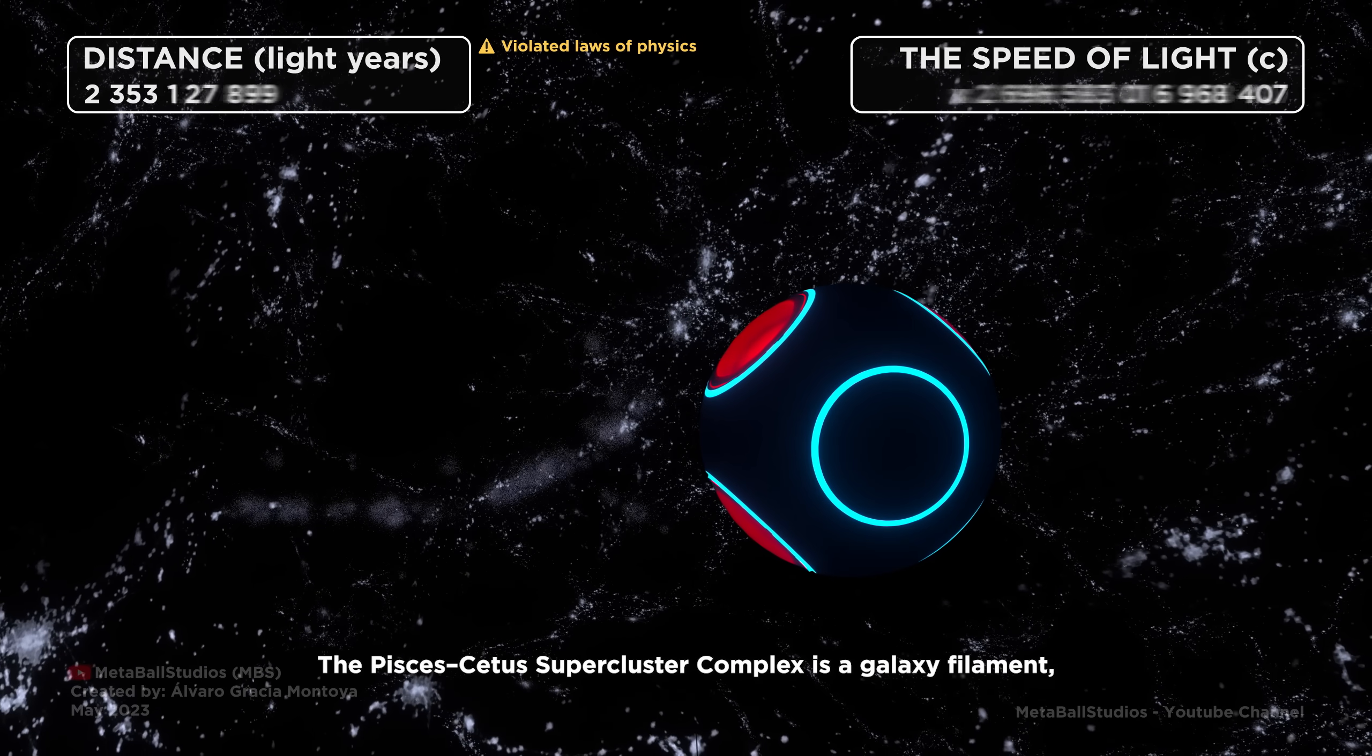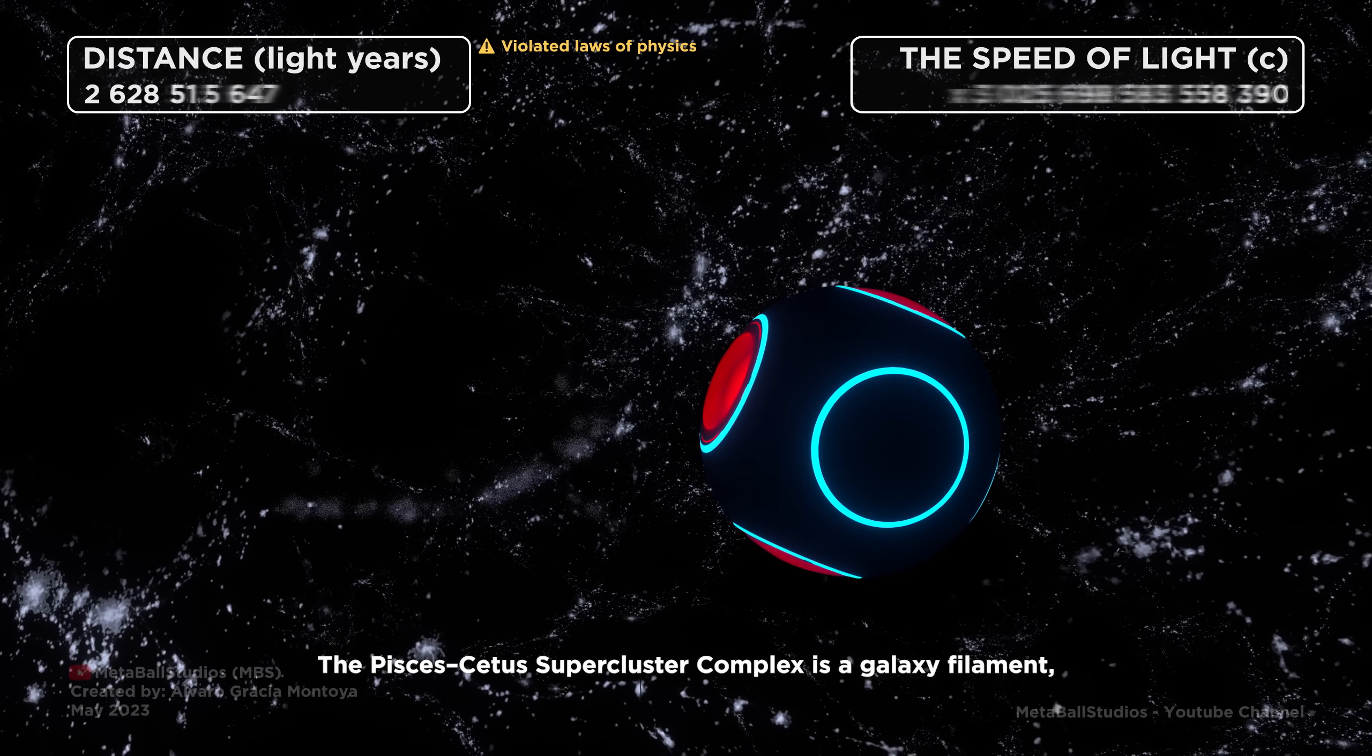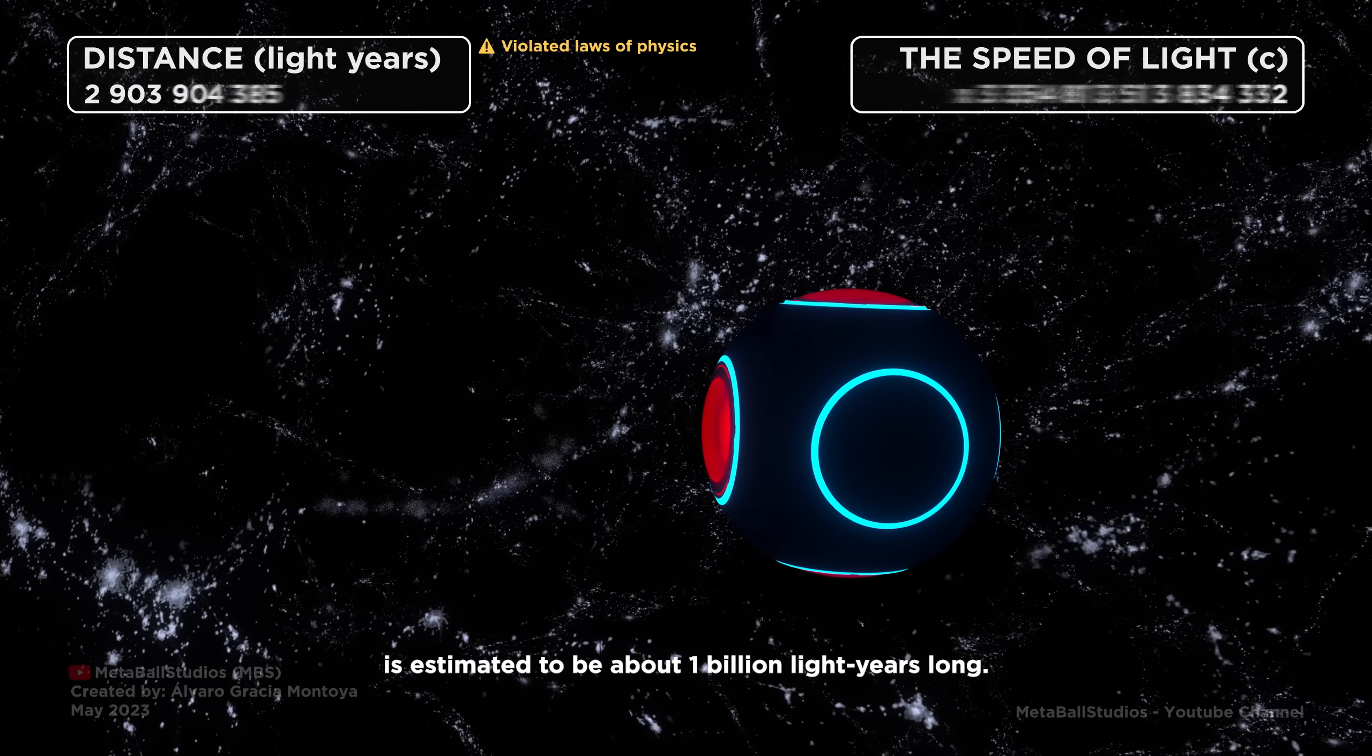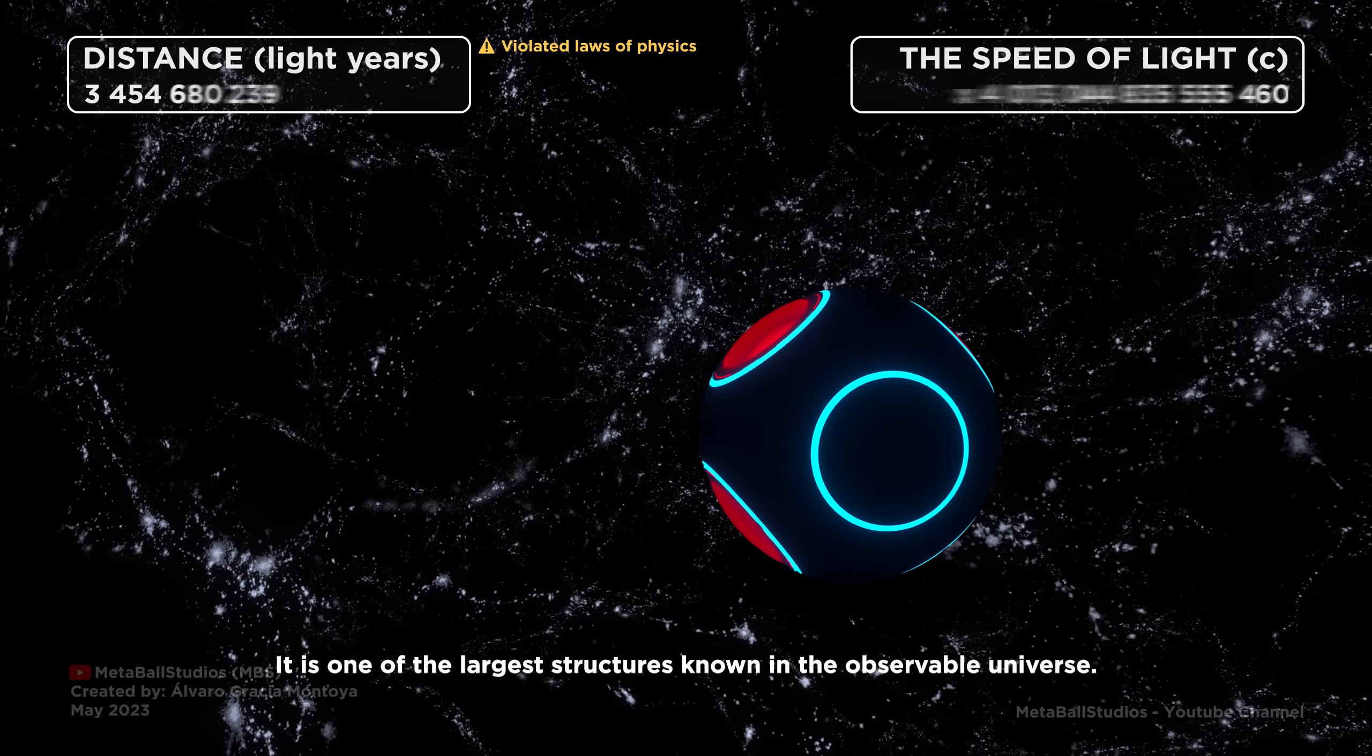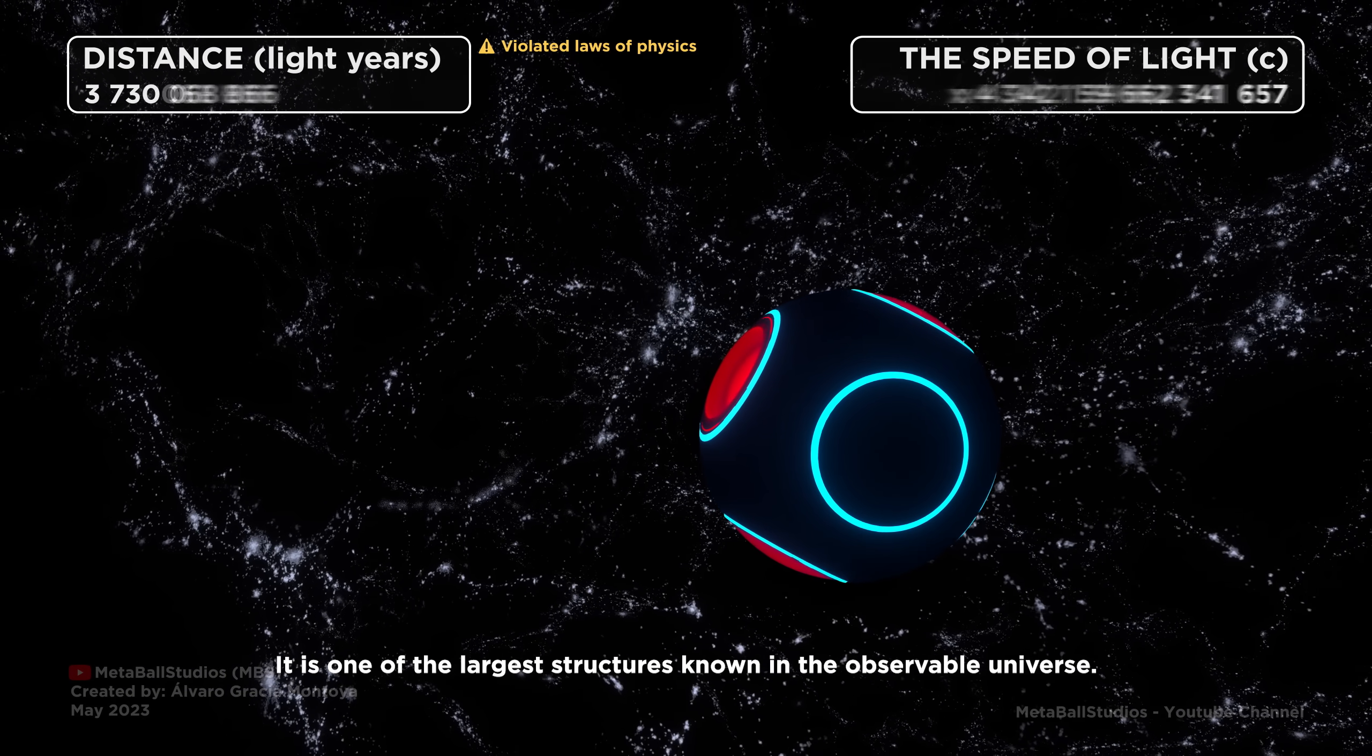The Pisces-Cetus supercluster complex is a galaxy filament, is estimated to be about one billion light years long. It is one of the largest structures known in the observable universe.